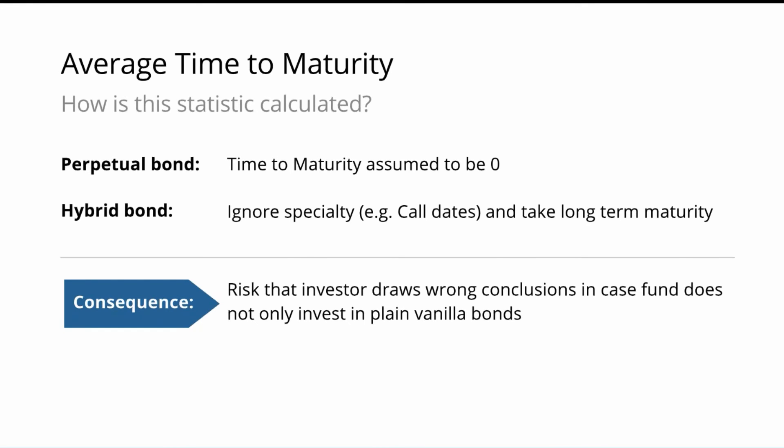Hybrid structures typically do not take call dates into account. As discussed, especially when bonds have a very high incentive to be redeemed, you should take the call date as the maturity. But in the standard reporting sphere, that's not the case — the long-term maturity is taken, which then raises the average time to maturity incorrectly. Depending on your portfolio, the statistic can either be totally misleading or just plain wrong. The consequence is that especially when working with not only plain vanilla bonds, you should not report the average time to maturity calculated in the standard way by a fund administrator to your investors.